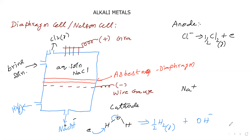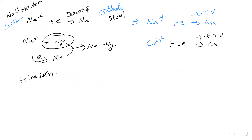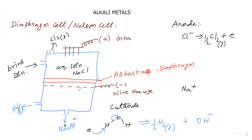Why does sodium not undergo reduction at the wire gauze cathode while it does at the mercury cathode? Because the nature of the cathode is different. Different metal cathodes provide different reduction potentials for the ions. At the wire gauze cathode, water undergoes reduction in preference to sodium ion. At the mercury cathode, sodium ion undergoes reduction in preference to water. If the nature of the electrode changes, the reduction potential also varies.